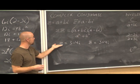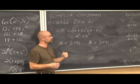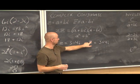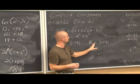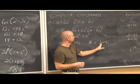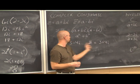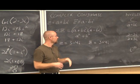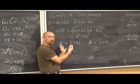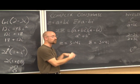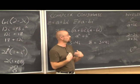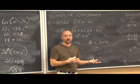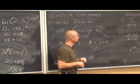For example, the conjugate of 3 minus 4i is 3 plus 4i — just change the sign in between. We introduce complex conjugates because they explain division in the complex number system.